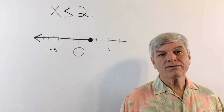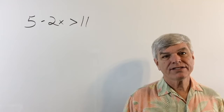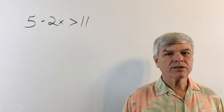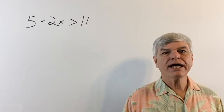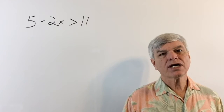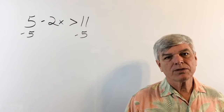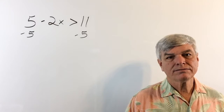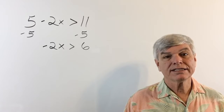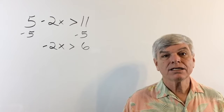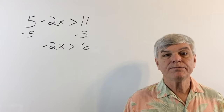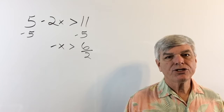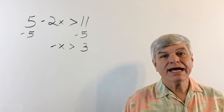Let's try to solve an inequality: 5 minus 2x is greater than 11. We're going to solve this pretty much the same way we would solve a regular equation — treat that inequality sign as an equal sign. Let's get the negative 2x alone by subtracting 5. So, negative 2x is greater than 6. Now let's isolate x by dividing by 2. Negative 2x divided by 2 is negative x, and 6 divided by 2 is 3. So, negative x is greater than 3.